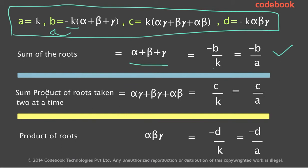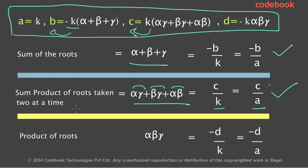The second relationship involves the product of roots taken two at a time: αγ + βγ + αβ. From the coefficient equation c = k(αγ + βγ + αβ), taking k to the other side gives αβ + βγ + αγ = c/k = c/a. So the sum of products of roots taken two at a time equals c/a, where c is the coefficient of the x term and a is the coefficient of the x³ term.